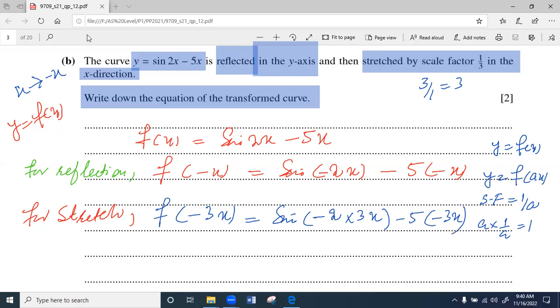So finally, our result will be f(negative 3x). Sine(negative 6x), negative times negative is positive, so it is positive 15x. And that is equal to, according to trigonometry rule, if sine angle has negative, we write it outside. So negative sine(6x) plus 15x. Now f(negative 3x) can be replaced with y. So new equation after transformation is y equals negative sine(6x) plus 15x.